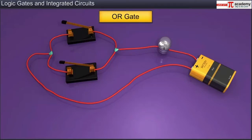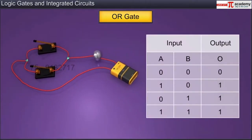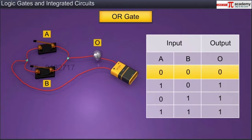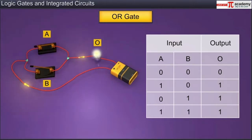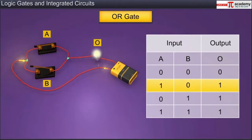Now let us learn about the OR gate. Here is a circuit representing an OR gate. Just like an AND gate, an OR gate also has two or more inputs. When both switches A and B are open, no current flows from them, so both inputs are zero; the bulb remains off, hence the output is also zero. When switch A is closed and switch B is open, input A is one while input B is zero; the bulb turns on, hence the output is one.